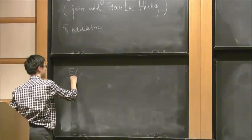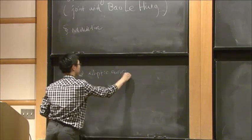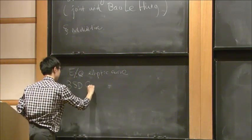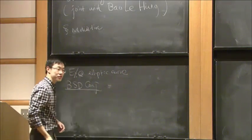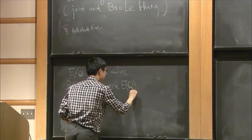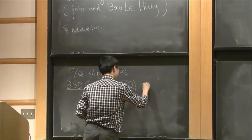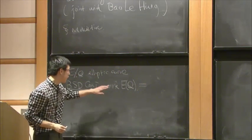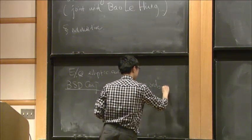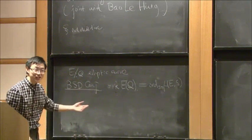Let E over Q be an elliptic curve. The celebrated conjecture of Birch and Swinnerton-Dyer asserts a conjectural identity between the rank of the Mordell-Weil group of E — the group of rational points, which is finitely generated by the theorem of Mordell-Weil — and another number called the analytic rank, defined in terms of the analytic object called the L-function of E, and its order of vanishing at s equals 1.